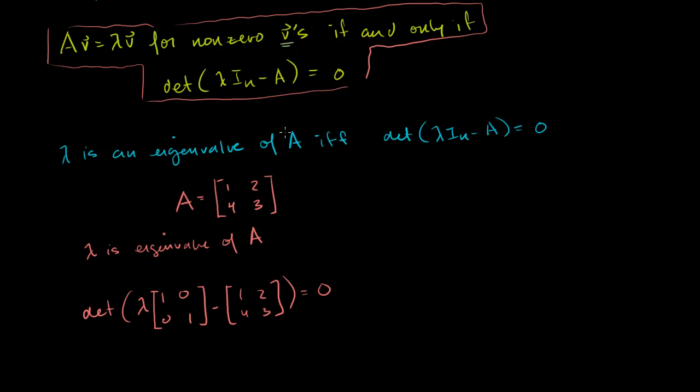Well, what is this equal to? This right here is the determinant of lambda times this is just lambda times all of these terms. So it's lambda times 1 is lambda, lambda times 0 is 0, lambda times 0 is 0, lambda times 1 is lambda. And from that, we'll subtract A. So you get 1, 2, 4, 3. And this has got to equal 0.